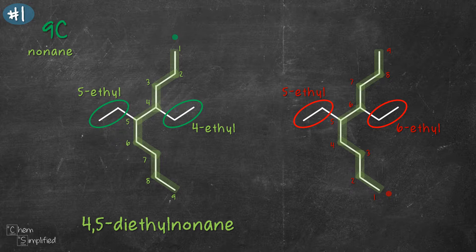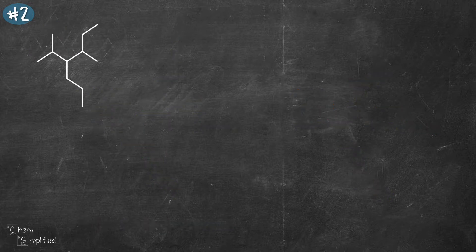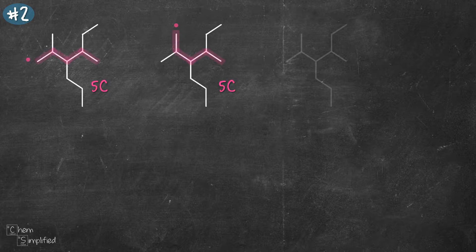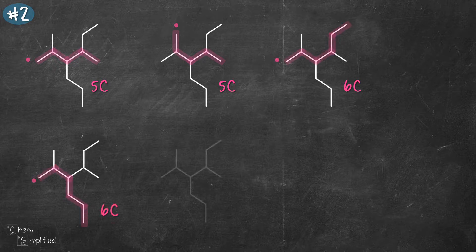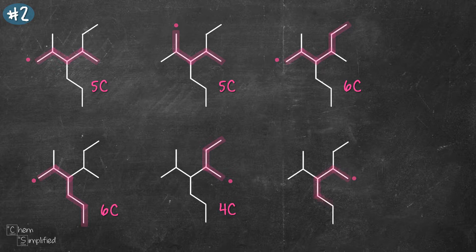Now that we're done with the first compound, let's move on to the second compound. What was the longest chain you counted? Let's go through all the possible combinations to see which is the longest chain. Since there are quite a few substituents here, we have a few more possibilities to consider. The longest chain we can get from this compound is 7 carbons long.